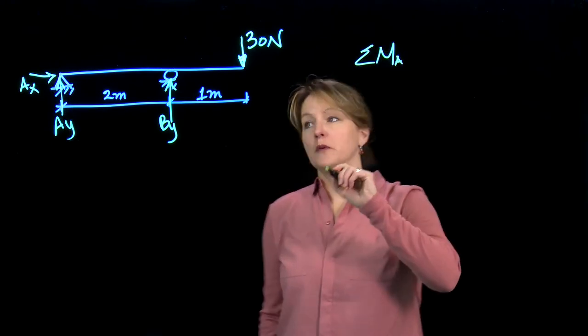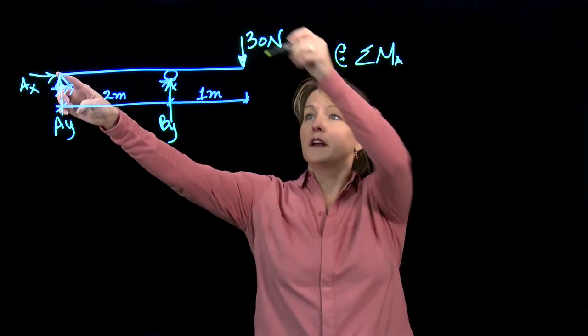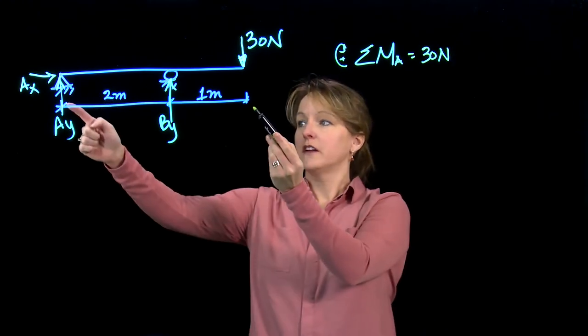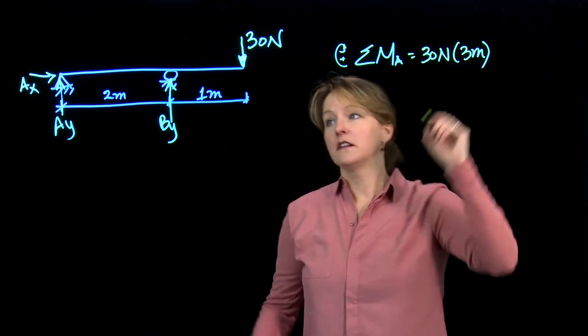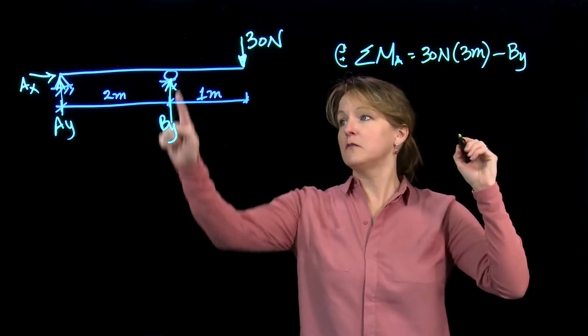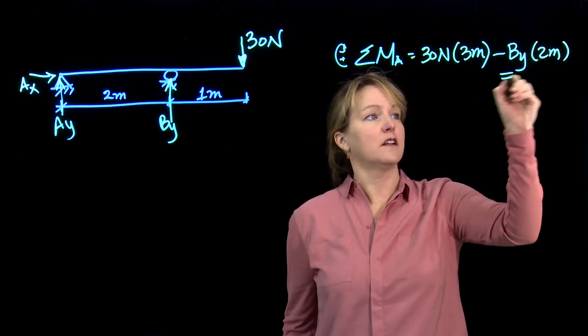Summing the moments about point A, I'll go clockwise. If I'm about this point, I have 30 newtons acting at a total of 3 meters. And I will subtract off the vertical reaction at B, that's times 2 meters, and that all equals 0.